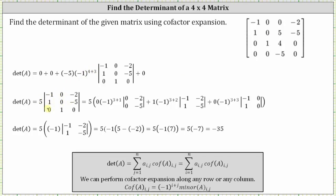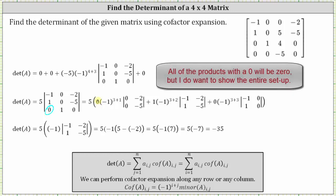Now we need to evaluate this three by three determinant using cofactor expansion. Because row three has two zeros, we will perform cofactor expansion along row three. We have five times the value of this determinant, so we write five and then open parenthesis. The element in row three, column one is zero — times negative one raised to the power of three plus one. We eliminate row three and column one, which gives us a two by two determinant where the first row is zero, negative two and the second row is zero, negative five.